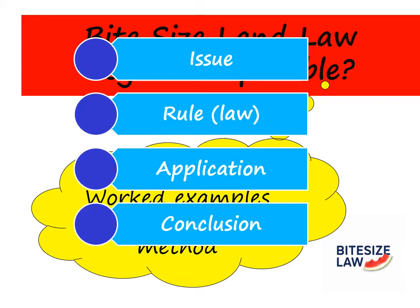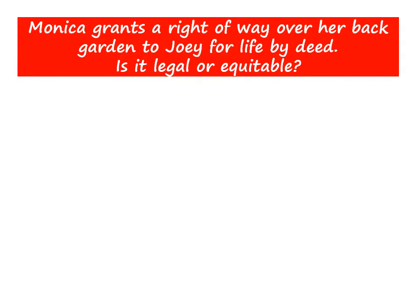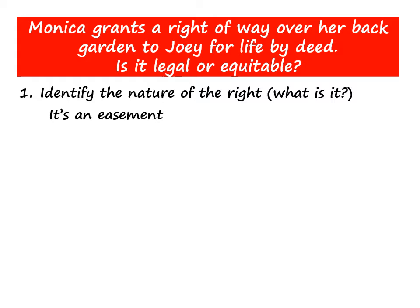Here's our first example. Monica grants a right-of-way over her back garden to Joey for life by deed. The first issue is: what is it? Well, it's a right-of-way, which is an easement, and the first main issue we need to look at is whether an easement is capable of being legal.